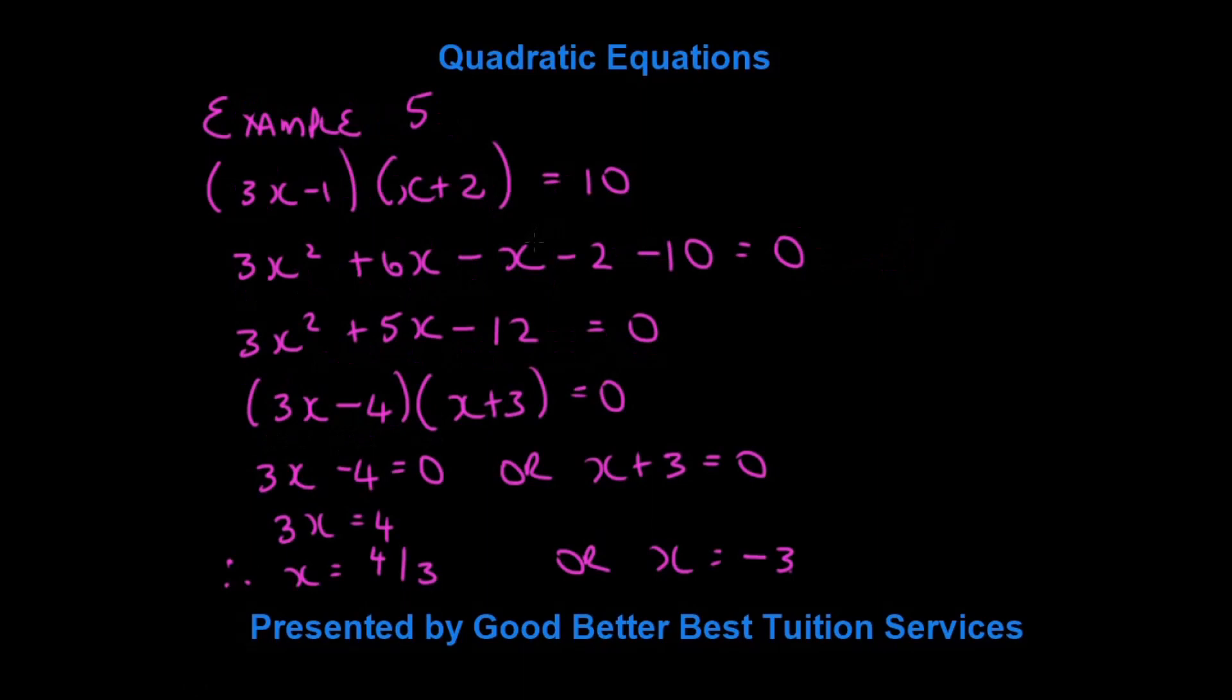Let's look at our final example. This is a more complex example. We have in brackets 3x minus 1 times x plus 2 is equal to 10. Now, what we want to do is we need to multiply out. So we'll have 3x squared plus 6x minus x minus 2. And we bring that 10 over to the left-hand side, minus 10 is equal to 0.